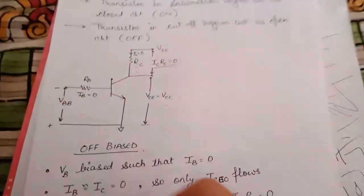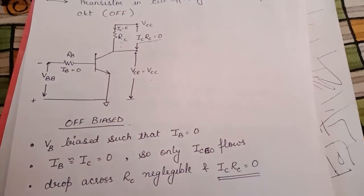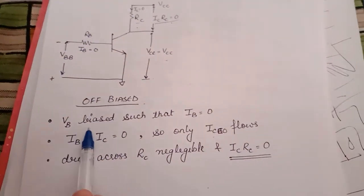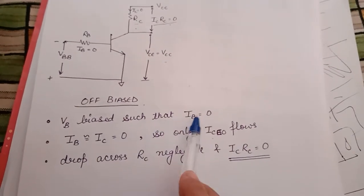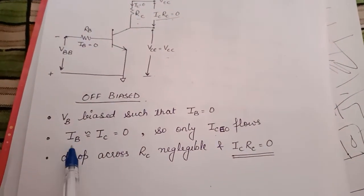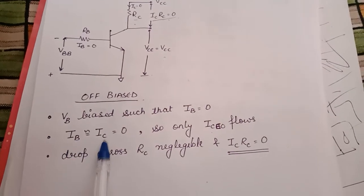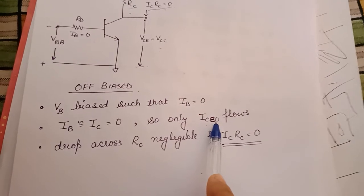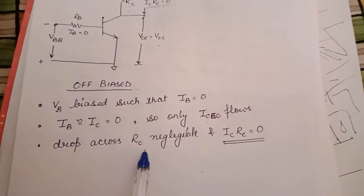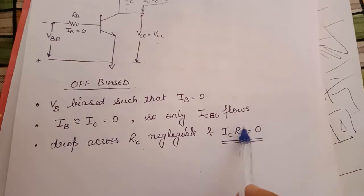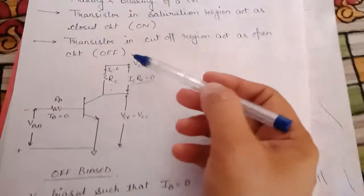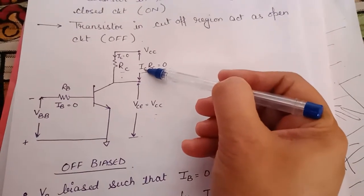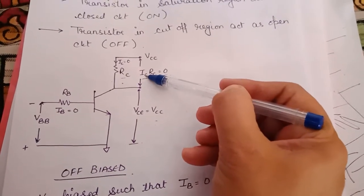This is the circuit diagram for which the transistor operates in the cutoff region. VB is biased such that IB equals zero — that is, it is reverse biased. When IB equals zero, correspondingly IC is zero; only leakage current flows, which is approximately zero. So voltage drop across RC is negligible: IC × RC equals zero. Since current flow is approximately zero, the switch is in the open state.